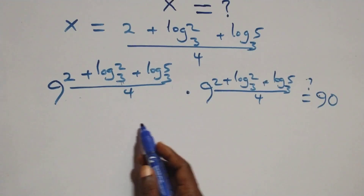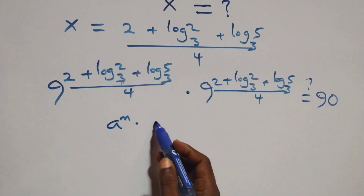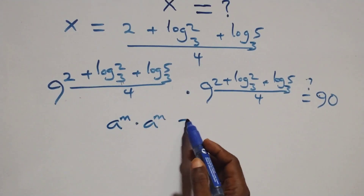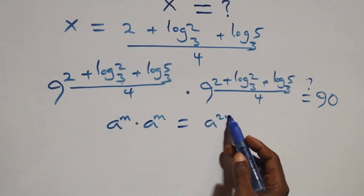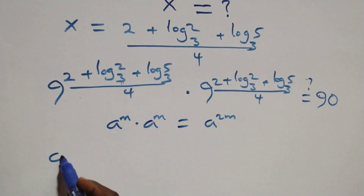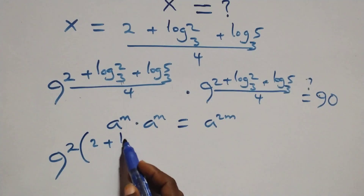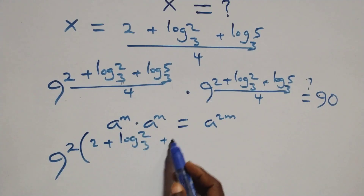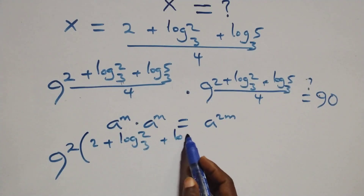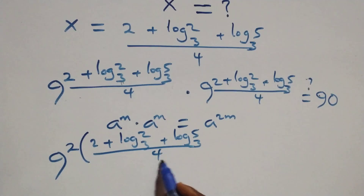We have the same base multiplying. When we have a raised to power n times a raised to power n, this is the same as a raised to power n plus n, or a raised to power 2n. So we can write it as 9 raised to power 2 times (2 plus log 2 base 3 plus log 5 base 3) all over 4.